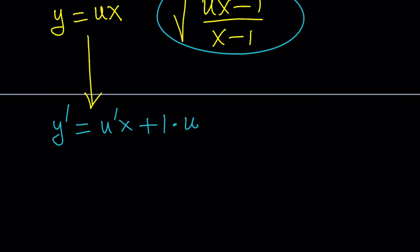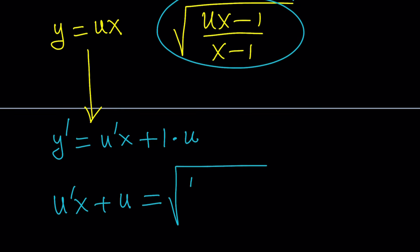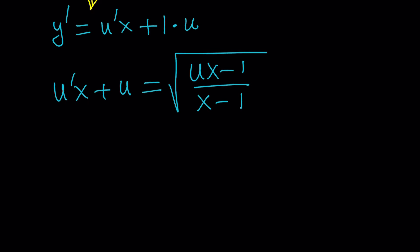So, y prime is going to be replaced with u prime x plus u, and this is going to equal the square root of ux minus 1 divided by x minus 1. Now, the expression inside the radical didn't really simplify nicely, did it? For example, if we didn't have a u here, or if u was 1, then you would get a constant term, which would be nice. But in this case, things are a little bit more complicated.